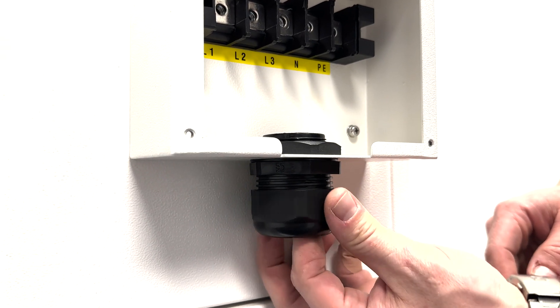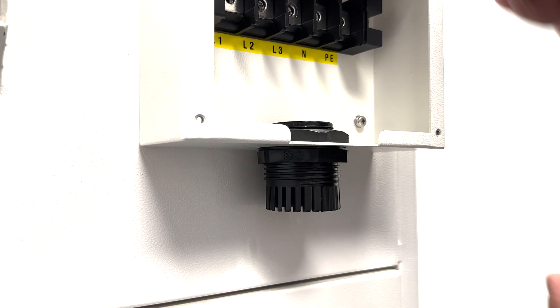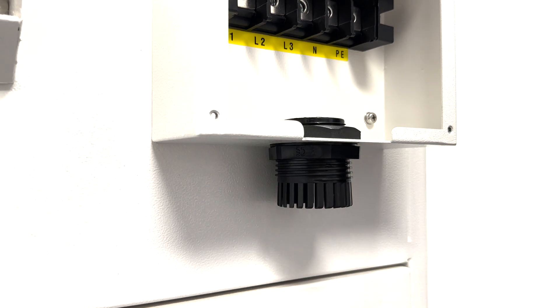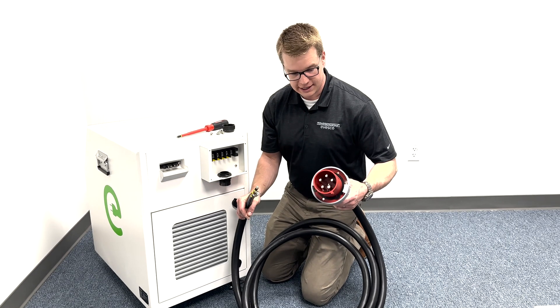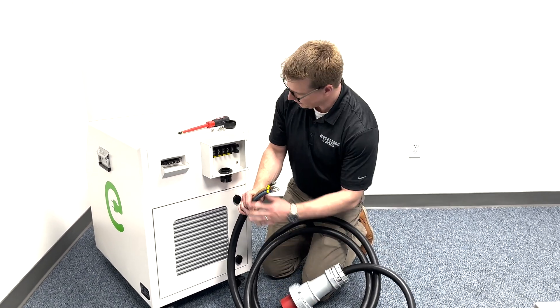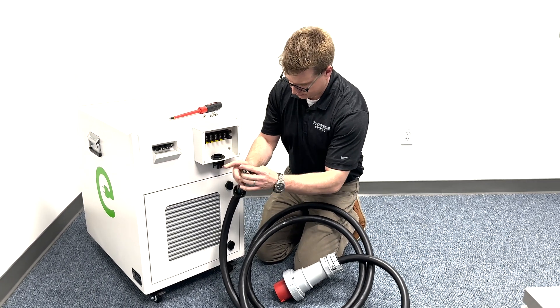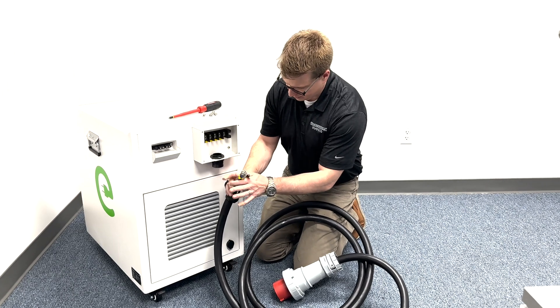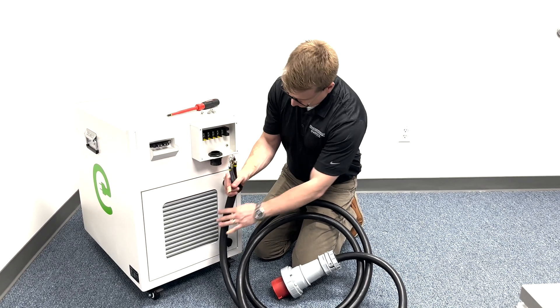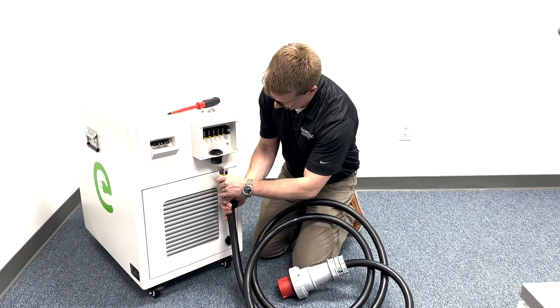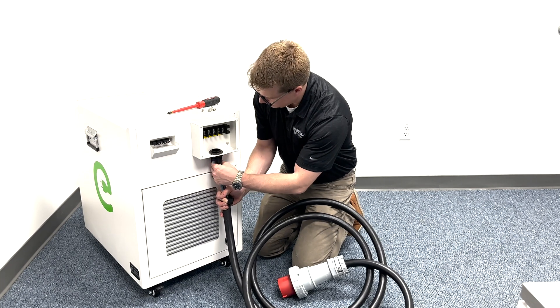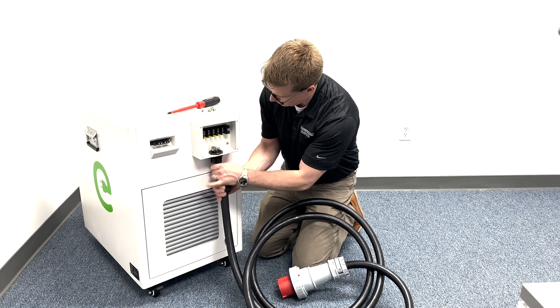Next, we'll remove the cable nut. Then we'll take the input cable and thread the cable nut on, and then we will insert this up into the junction box.